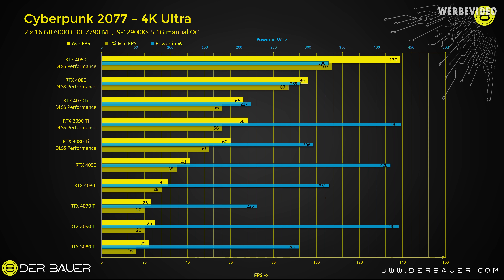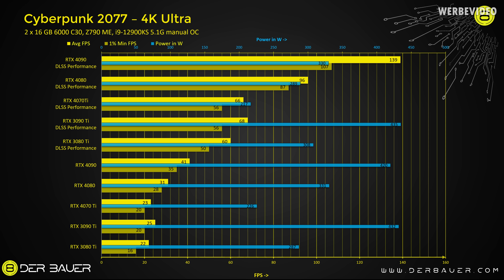Moving to Cyberpunk 2077 — you can see both DLSS performance and non-DLSS results. Yellow marks the average FPS chart, and darker yellow shows the 1% low FPS. Blue indicates power consumption per card. The RTX 4070 Ti, both with and without DLSS, is pretty much on par with the RTX 3090 Ti, but consumes only about 220 Watts — roughly half of a 3090 Ti. Without DLSS, Cyberpunk is completely unplayable, but with DLSS Performance you can reach about 60-70 fps. Compared to an RTX 3080 Ti, the 4070 Ti is about 10-12% faster while consuming 30% less power.